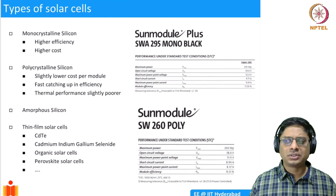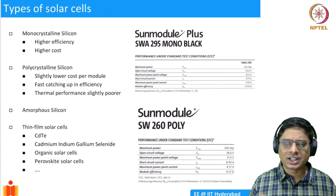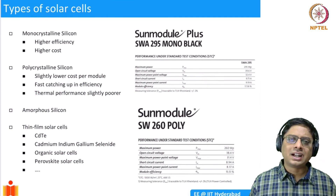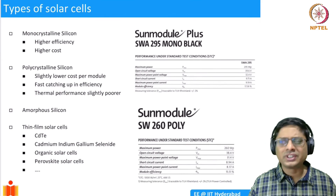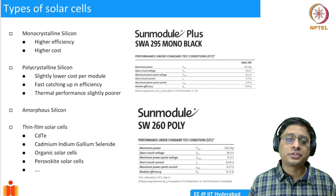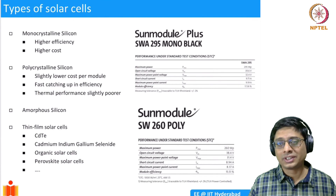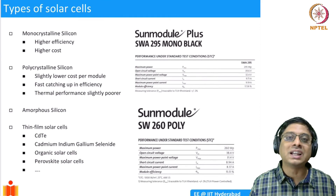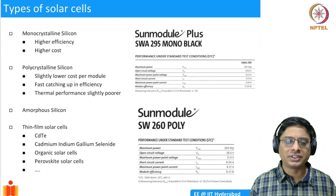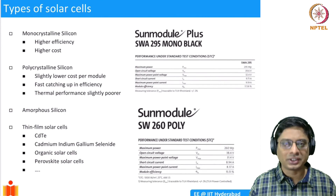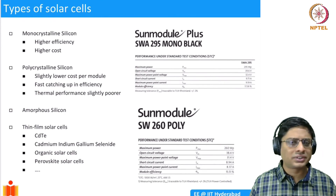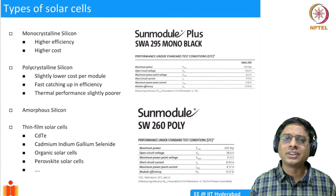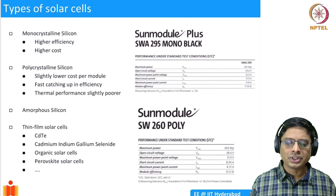There are also amorphous silicon-based solar cells and a lot of current research in thin film solar cells, using organic materials or perovskite materials to improve efficiency. With the background from this course, you will be able to understand what researchers are doing — reading current papers you will recognize the maximum power point, current-voltage characteristics, and all the related graphs appearing in the literature.